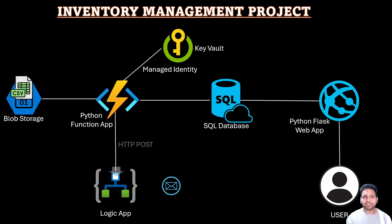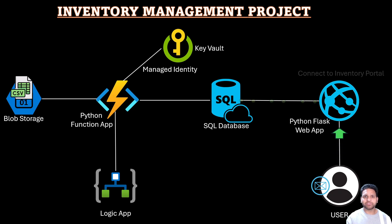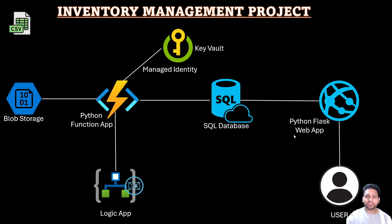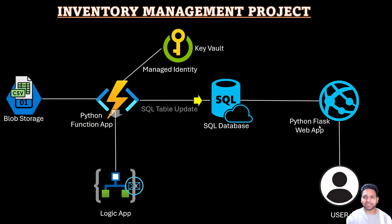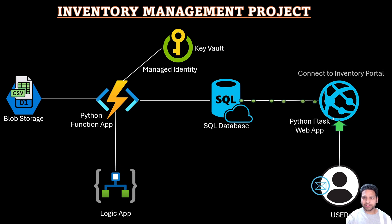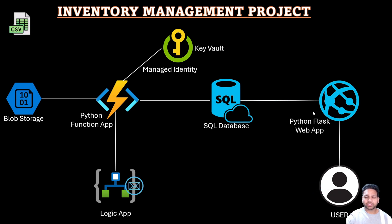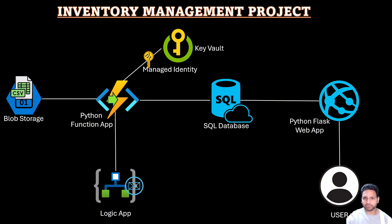The user will receive a notification that the inventory has been updated and can check the inventory portal. For the inventory portal, we'll be using an Azure Web App with Python Flask to create a web interface. This web app will connect to the SQL database and retrieve the details of all products. Once the user receives the notification, they can go to the portal to check all product details or search for a specific product.